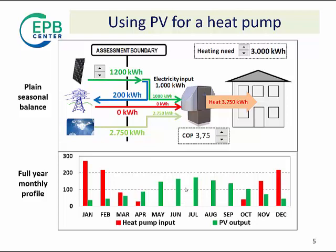So the yearly calculation implicitly assumes that the PV electricity produced in winter will power your heat pump in summer, whilst the monthly approach will show that your heat pump is powered mostly by the grid in winter, whilst in summer the PV electricity is exported to the grid. The sum of monthly results in a yearly calculation can be simulated by a matching factor — that is, even if there is enough PV production to cover the whole electricity input, we will take into account that only 30% of this input will be covered. So only 300 kWh of PV electricity is used in the heat pump, and 900 kWh is exported.